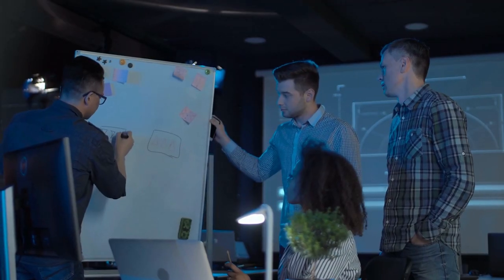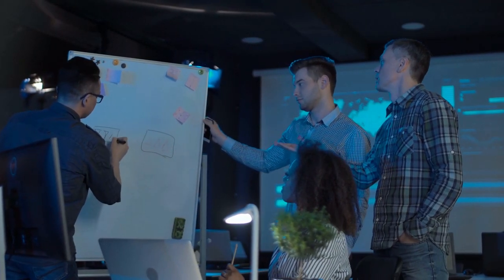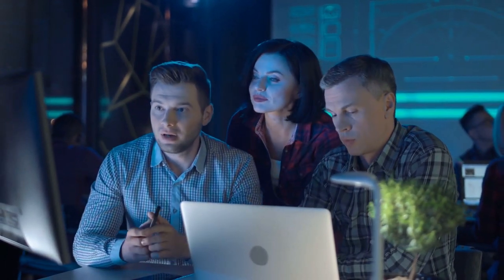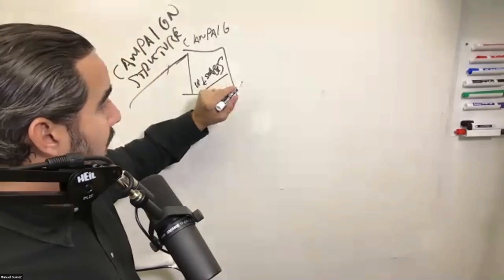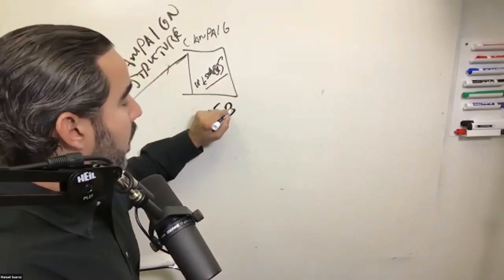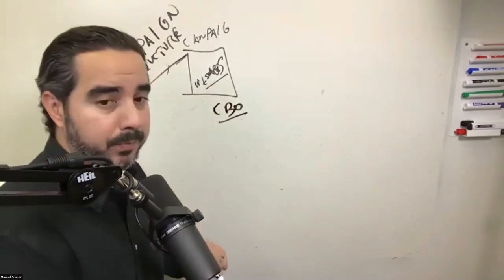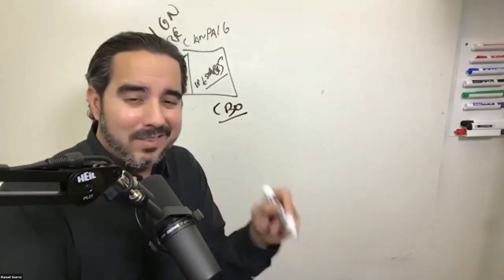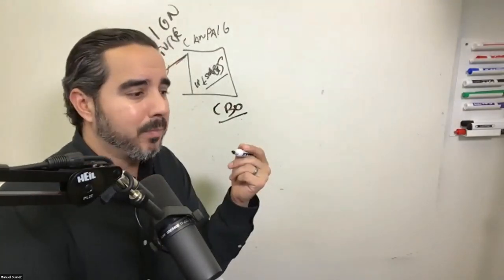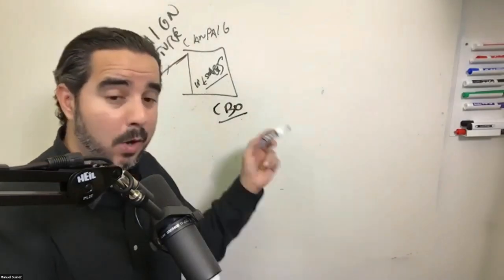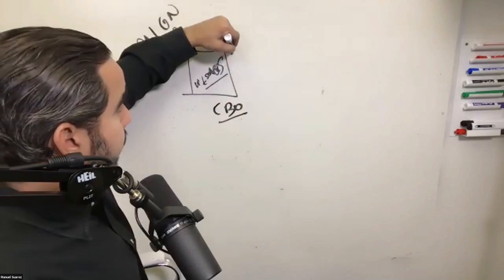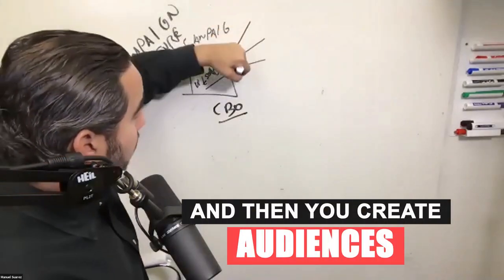A system is how you build an organization, a marketing department that can actually go in there and do the job correctly every single time. One campaign objective, in this case messages. You turn on something called CBO. Turn it on. In the future, somewhere in 2020, this is going to be the default option. Right now, CBO has to be turned on. So you turn on CBO and then you create audiences.